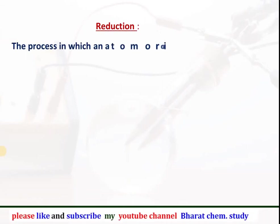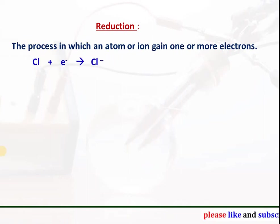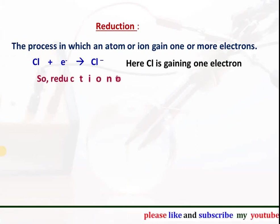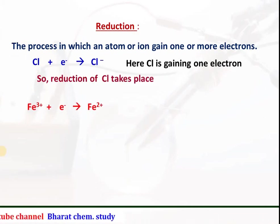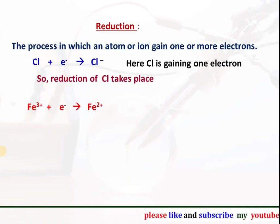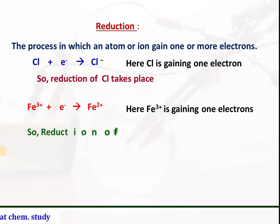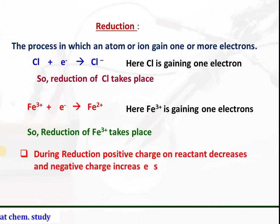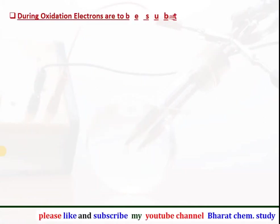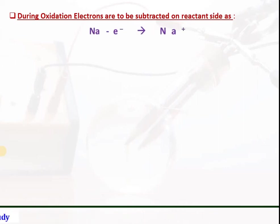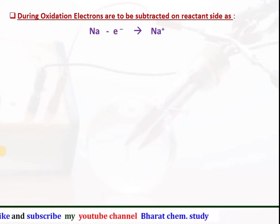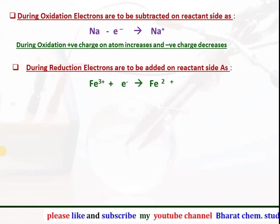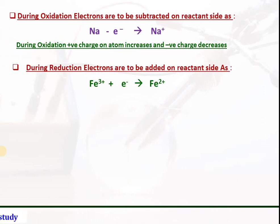Reduction: the process in which an atom or ion gains one or more electrons is called reduction. For example, chlorine gains one electron to form Cl⁻ ion — so the reduction of Cl takes place. Similarly, Fe³⁺ ion gains one electron to form Fe²⁺ ion — so the reduction of Fe³⁺ ion takes place. During reduction, the positive charge on the reactant decreases and the negative charge on the reactant increases. During oxidation, electrons are subtracted from the reactant side; during reduction, electrons are added to the reactant side.